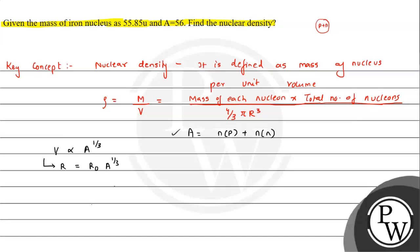This is the expression from Rutherford's experiment, where R0 is empirically found. Its value comes out to be 1.2 times 10 raised to minus 15 meters. Using these results, we will analyze the given question.